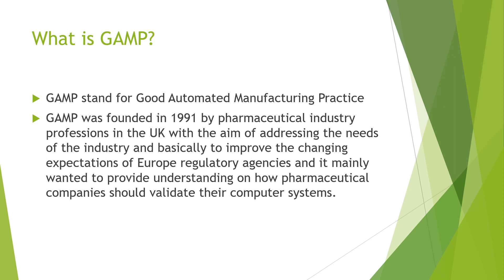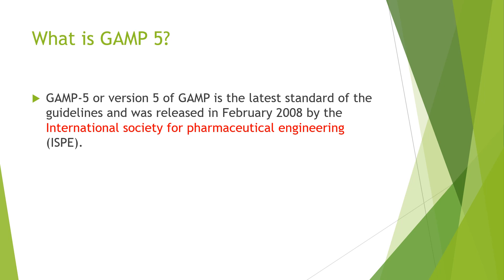Now let's talk about what GAMP 5 means. GAMP 5 is the latest version of GAMP currently in use. It was introduced in February 2008 by ISPE — the International Society for Pharmaceutical Engineering. Please remember this: if you go for any interview, people will definitely ask who introduced GAMP 5 and in which year — the answer is 2008 by ISPE.